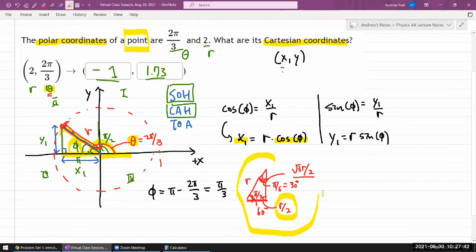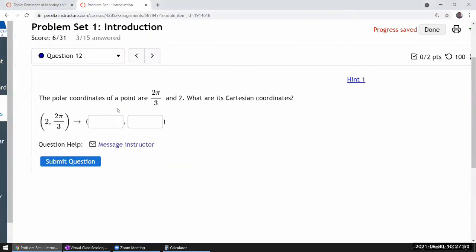So let me plug that in and then we'll move on to the next question. So I think I can remember that, minus 1, 1.73. Okay, good.